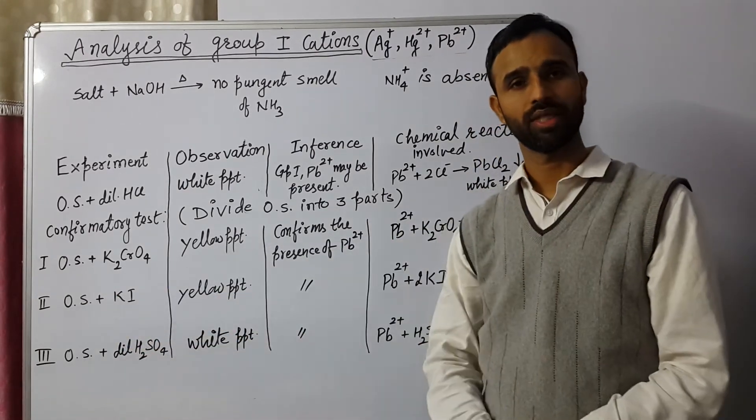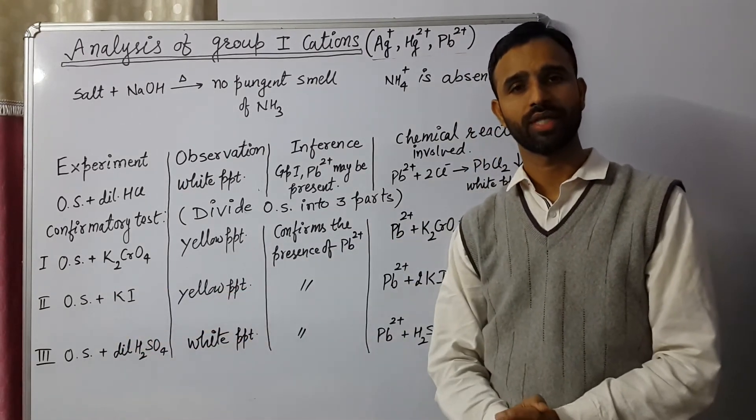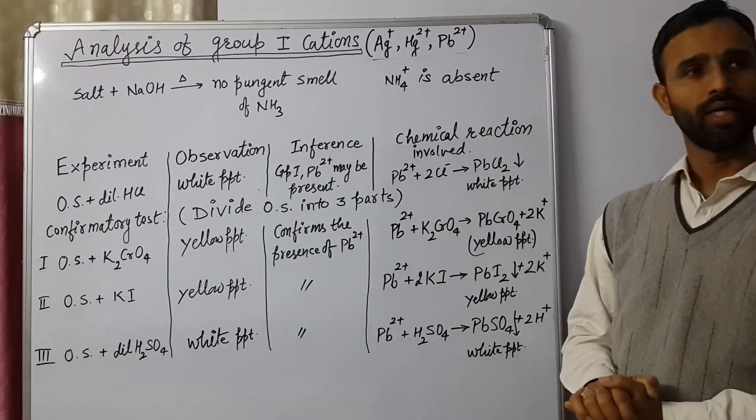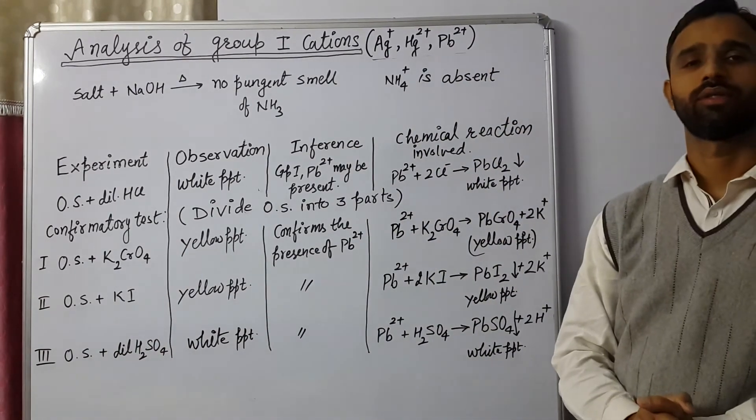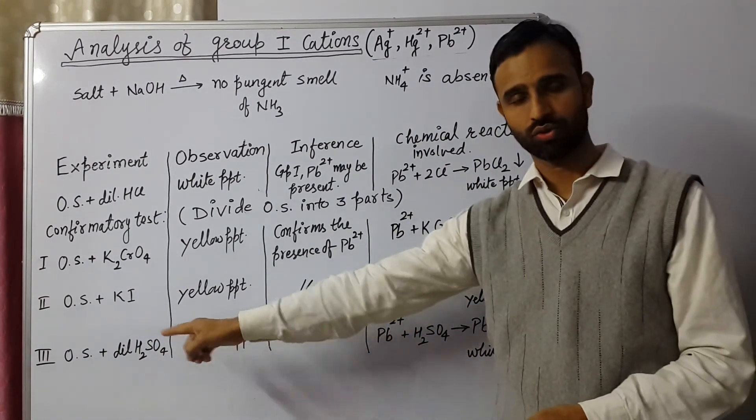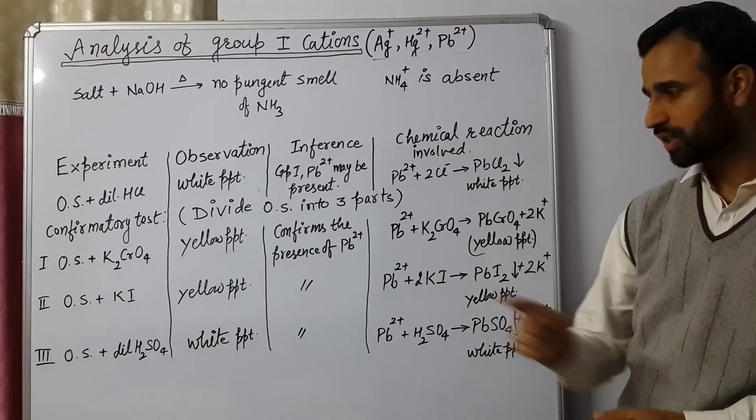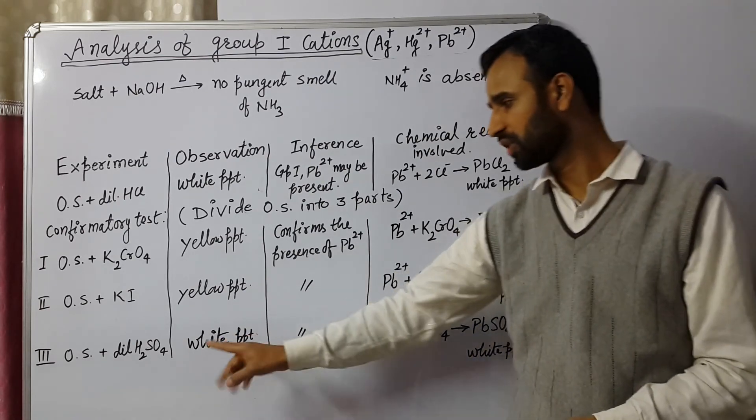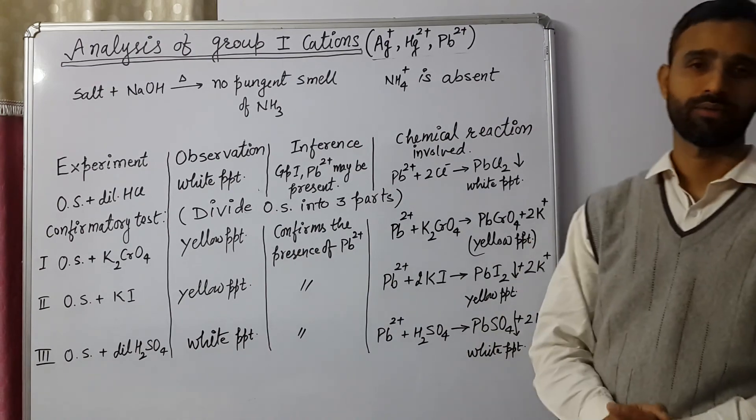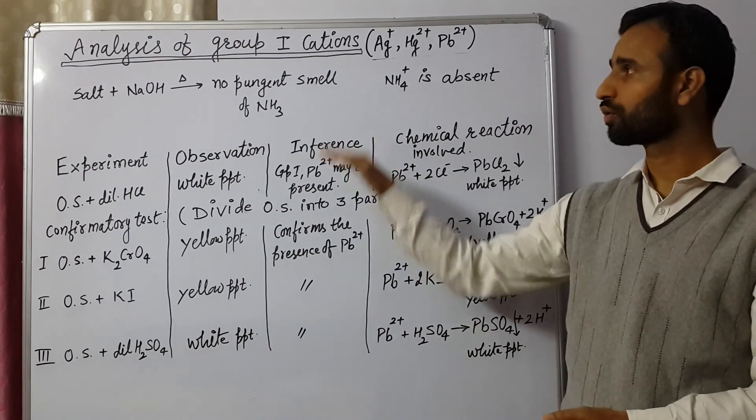In second test tube, we add KI, yellow precipitate appears. That is of PbI2. And in third test tube, we add dilute H2SO4. When we add dilute H2SO4, again white PPT appears. And that white PPT is of lead sulfate. So that's all for group 1.